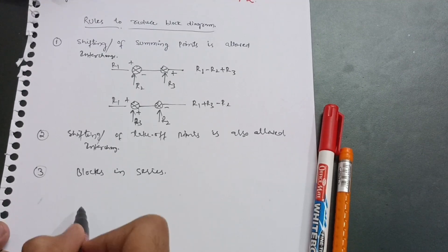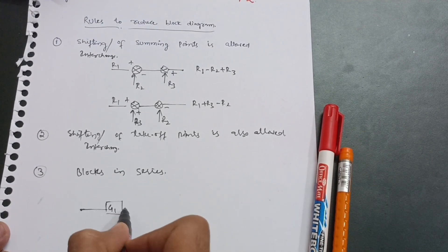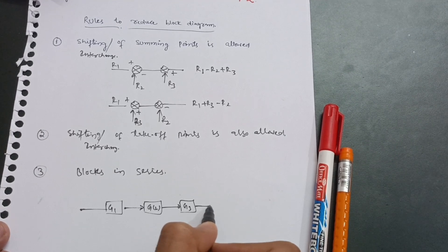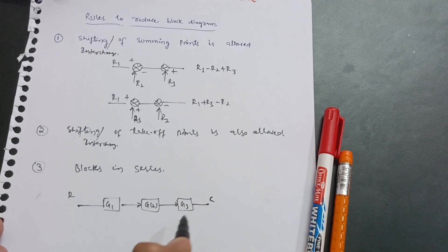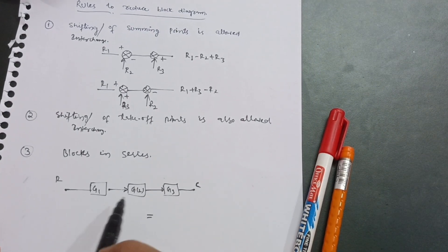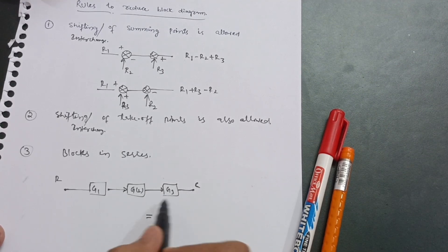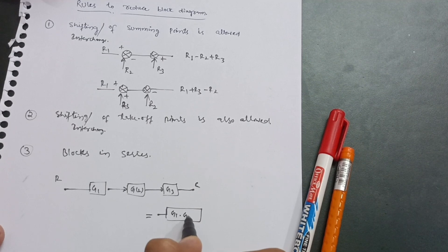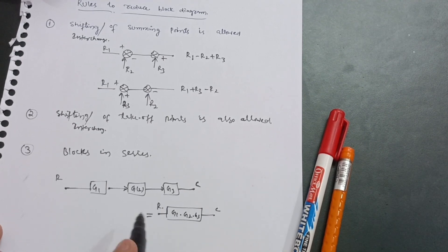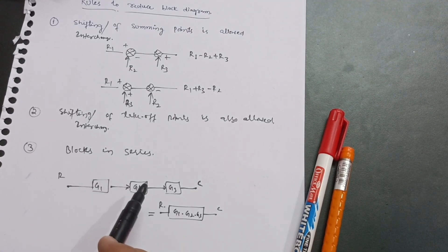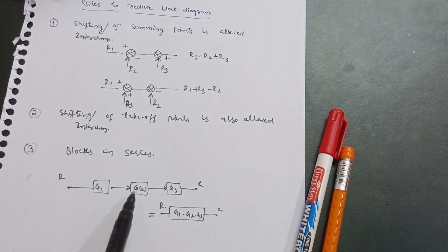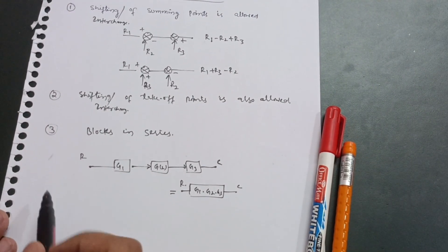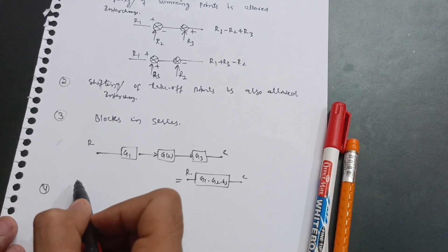The third rule is blocks in series. In the forward path, if there is block G1, another block G2, and block G3 connected in series, with a reference input and output — when blocks are in series, you combine them by multiplication. You get one equivalent block as G1 × G2 × G3. You simply multiply these three blocks.